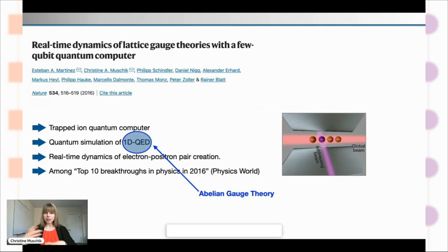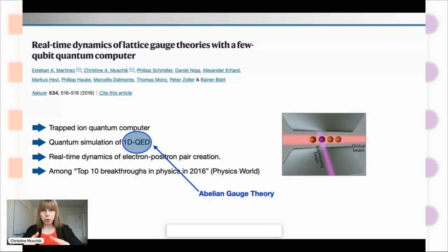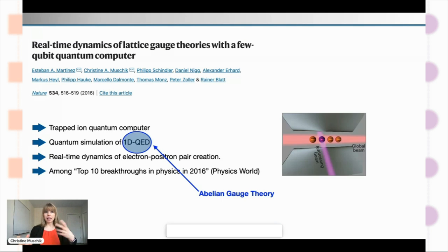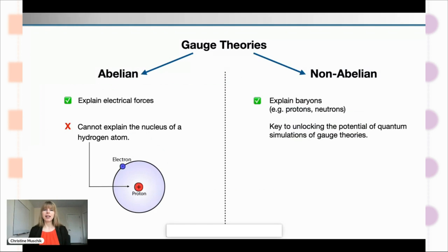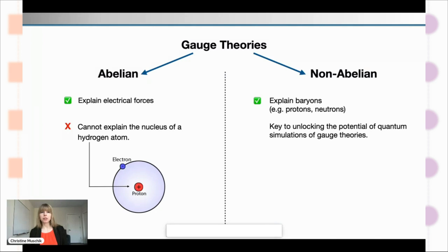Even though I was extremely happy with these accomplishments, I also want to point out an important limitation at the time: the specific model we looked at was quantum electrodynamics — one-dimensional quantum electrodynamics — the theory which describes the interaction of charged particles through light. This is a so-called abelian gauge theory. These gauge theories — the backbone of the standard model of particle physics — come in flavors: the abelian flavor we looked at in 2016 and 2019, and a non-abelian flavor.